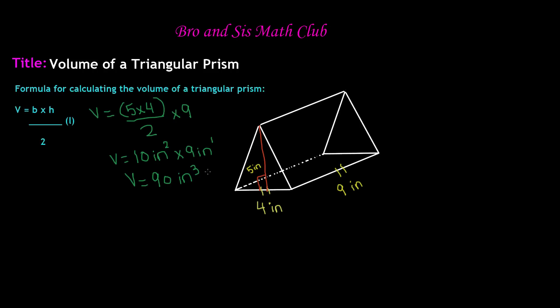So our volume for this triangular prism is 90 inches cubed. That's all there is to this topic. We'll see you guys next time. Bye.